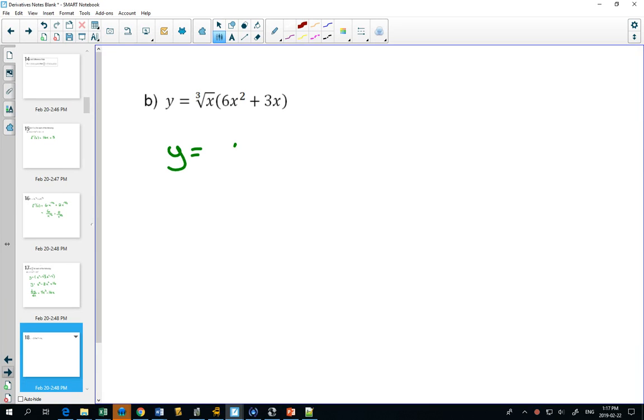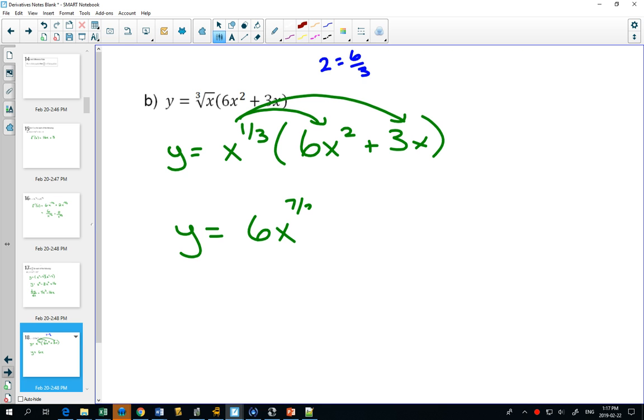Now again, we might take the time to change the cube root to x to the 1/3. Right now, we're restricted to only when we have power laws and adding and subtracting. So in this situation, I would distribute this. How do we multiply x to the 1/3 times x²? We have to remember exponent rules: when we're multiplying the same base, we can add the exponents. Remember that 2 is equal to 6/3, so if I have 1/3 plus 6/3, I'm going to get x to the 7/3, and 1/3 plus 3/3 will be x to the 4/3.